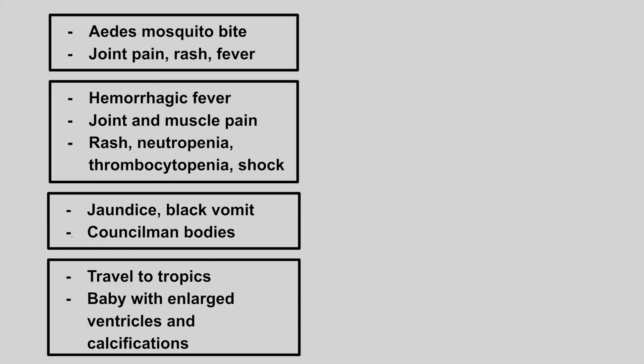The next set of vignettes are all going to be due to Aedes mosquito bites. In the first one, we see a patient with joint pain, rash, and a fever — this is chikungunya virus. The next patient, same mosquito bite, but this time they get a hemorrhagic fever, lots of joint and muscle pain, a rash, low neutrophil count, low platelet count, and shock. This is dengue.